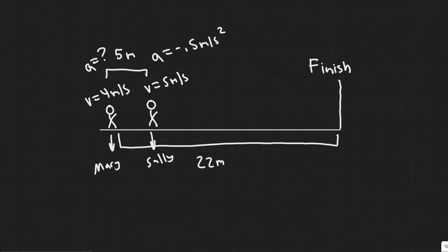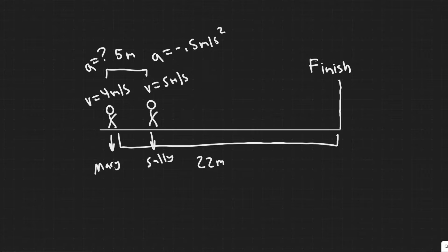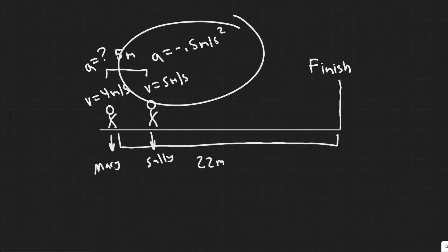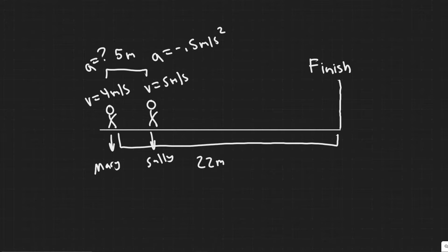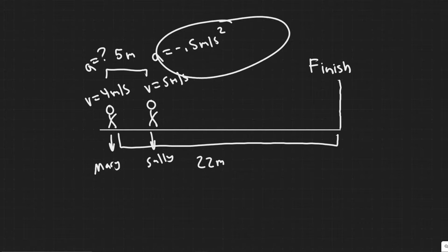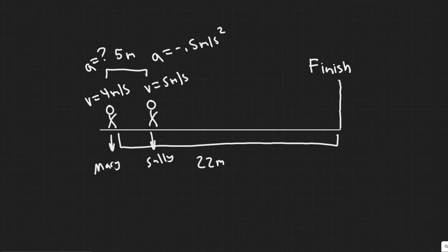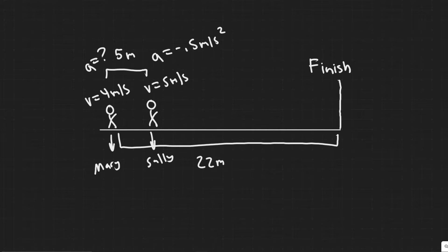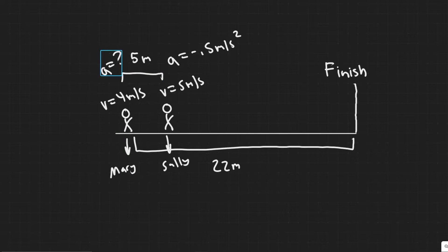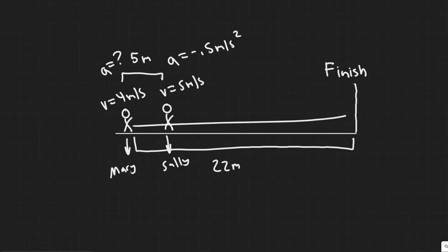Sally is going to be traveling 5 meters per second. During the rest of the race, Sally is going to have a deceleration of 0.5 meters per second squared. The negative just indicates that she's slowing down, basically accelerating in the opposite direction. What we're trying to find is the acceleration of Mary in order to finish at the same time as Sally.